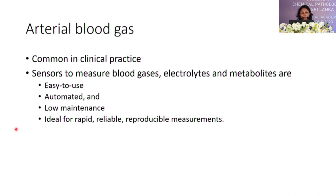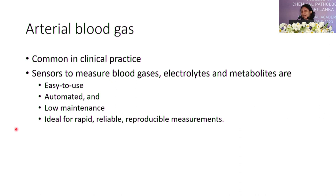Now, arterial blood gas testing. It is common in clinical practice and commonly used in ETUs, ICUs, and HDUs. These devices use sensors to measure blood gases, electrolytes, and metabolites. They are easy to use, automated, and require low maintenance, making them ideal for rapid, reliable, and reproducible results.